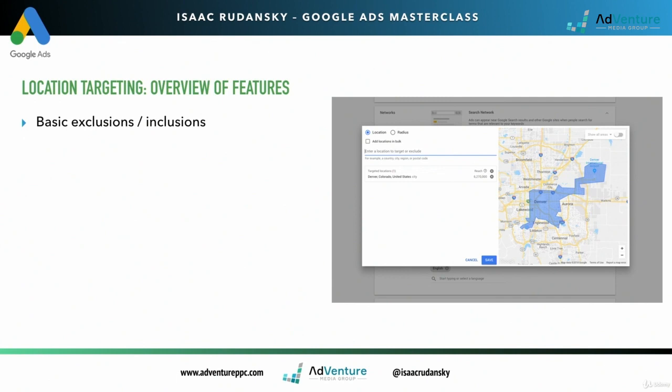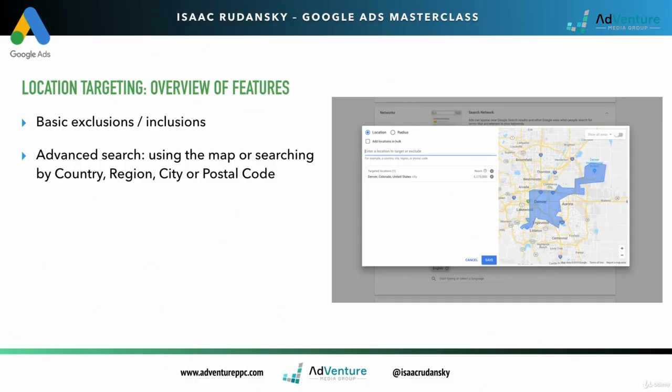Using the advanced search feature in AdWords, you're able to use an actual map and target or exclude by country, region, city, or zip code, postal code. So you can get really seriously focused in a real way. When you use radius targeting, you have the option to target anywhere between a one-mile and 500-mile radius. So you can't target 0.2 miles and you can't target an 800-mile radius.